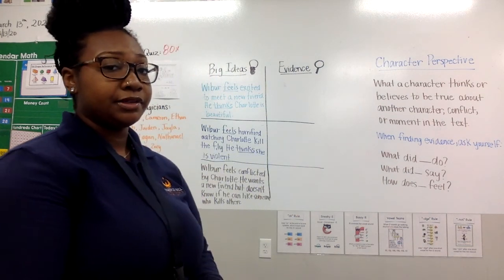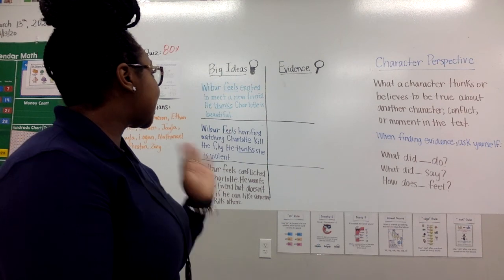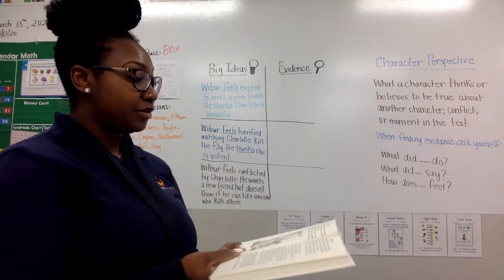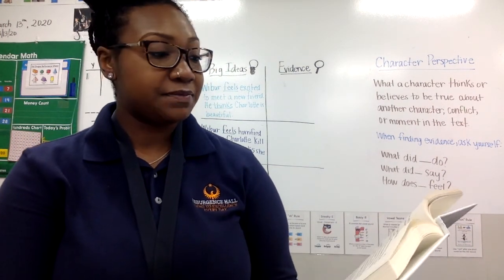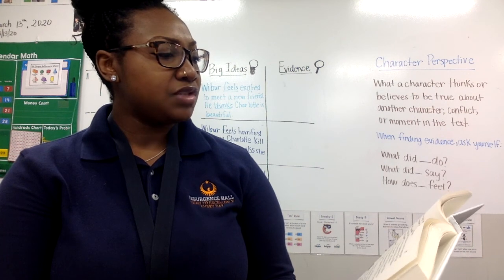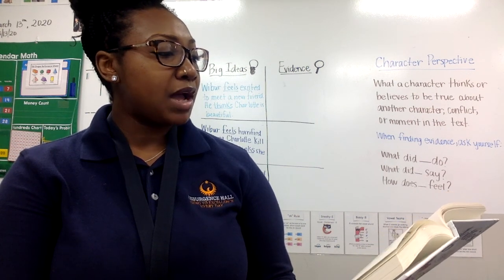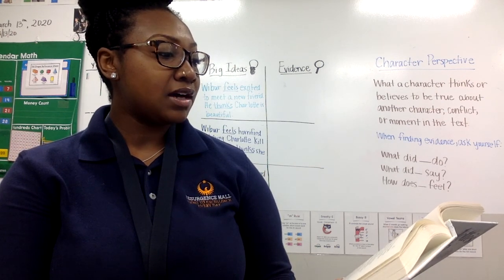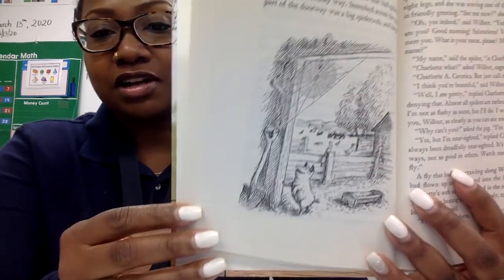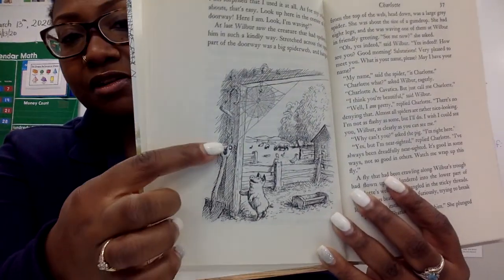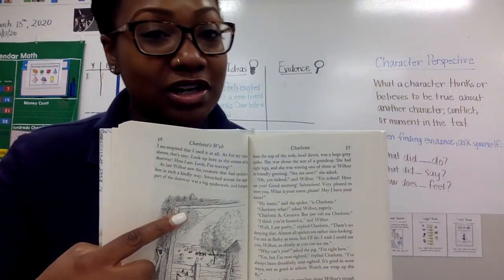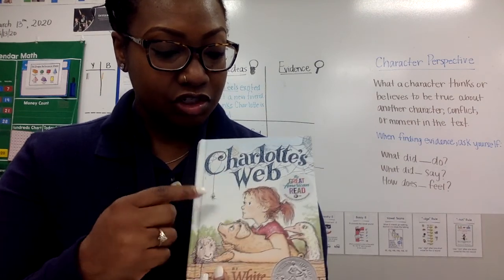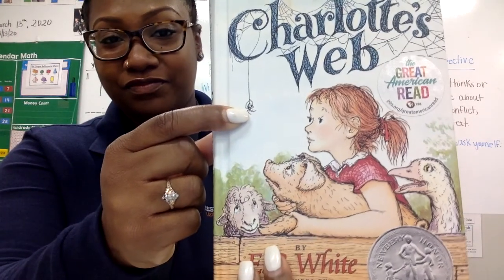So, let's stop and think about our big idea really quickly. The big idea says: Wilbur feels excited to meet a new friend. He thinks Charlotte is beautiful. Let's see where we can find some text evidence. 'As for my whereabouts, that's easy. Look up here in the corner of the doorway. Here I am. Look, I'm waving.' If you take a look at this picture here, there is Charlotte. Can you guess what Charlotte is? Thinking about the title of the book, Charlotte's Web, Charlotte is going to be a — let's keep reading.